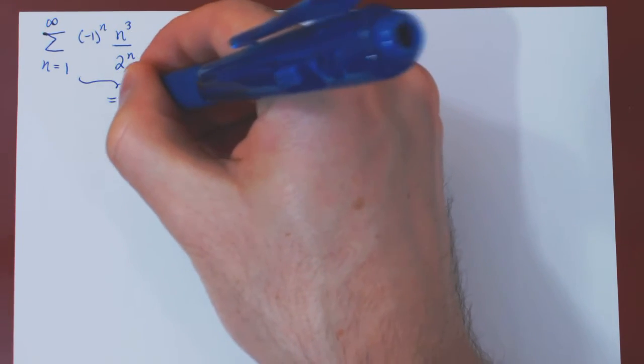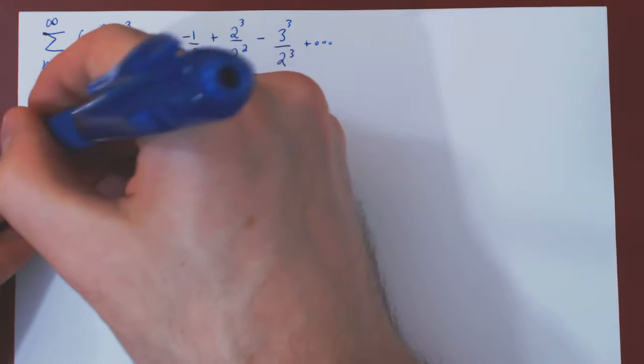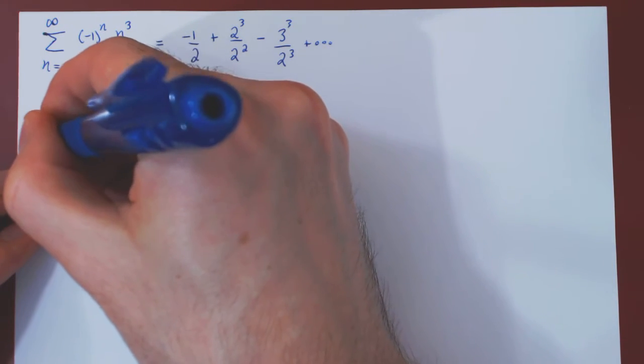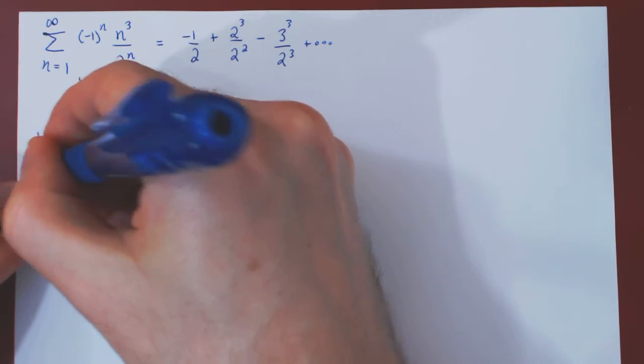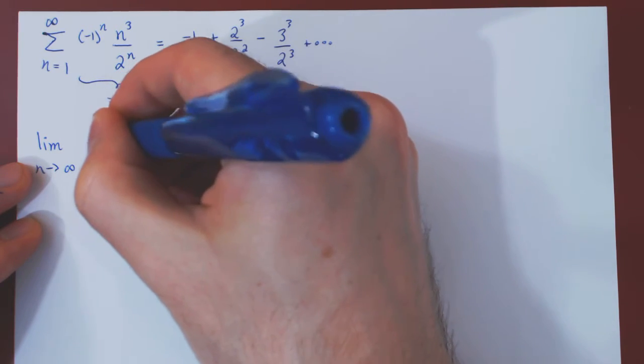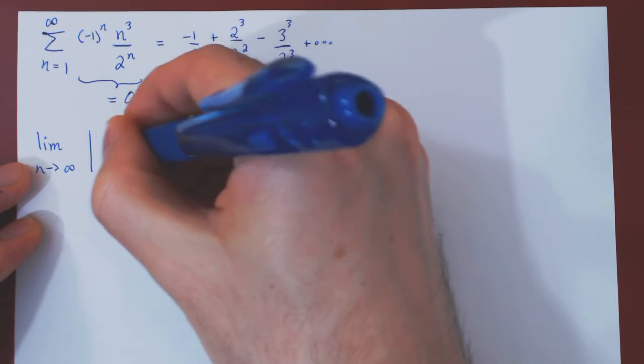So this is a_n, the sequence of terms we are summing over, and as always, in the ratio test, we look at the limit as n tends to infinity of the absolute value of a_{n+1} over a_n.